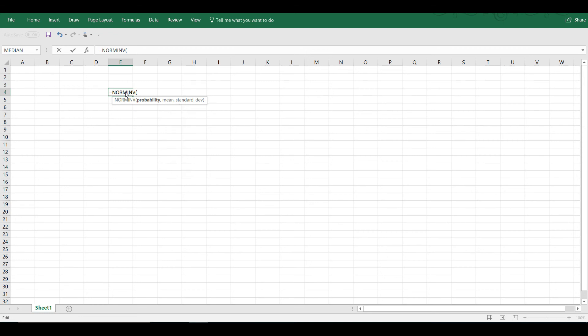So for probability we type in 0.9, that's the area at or below the x value, comma. The mean is 80, standard deviation is 3, close parenthesis, hit return, and we get 84.84465.